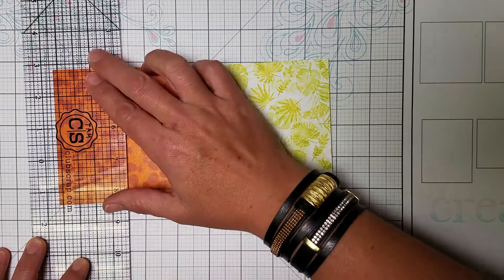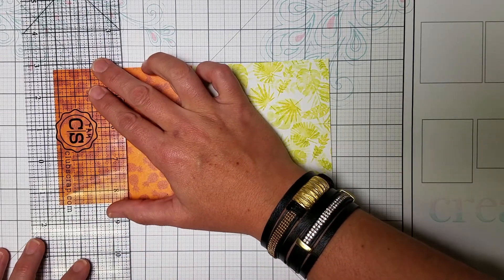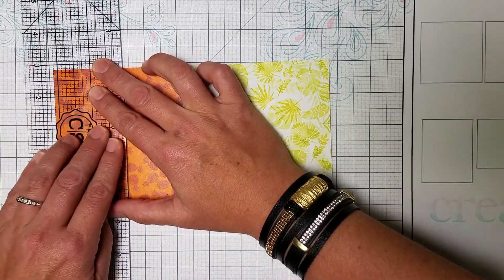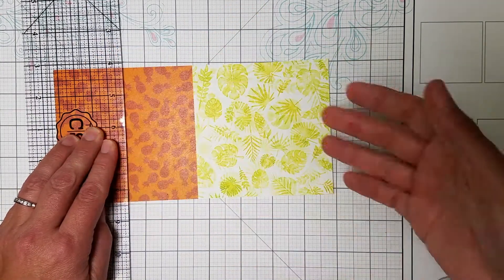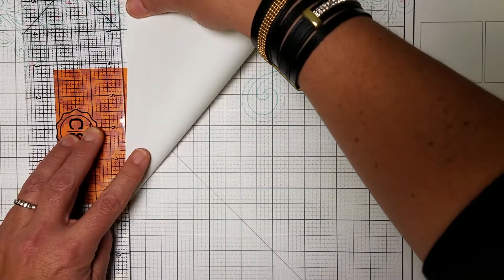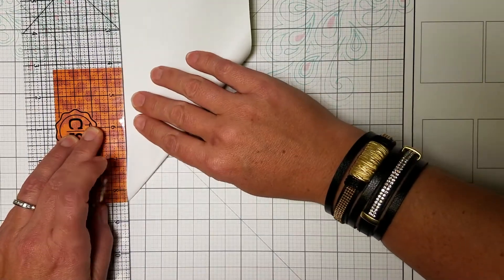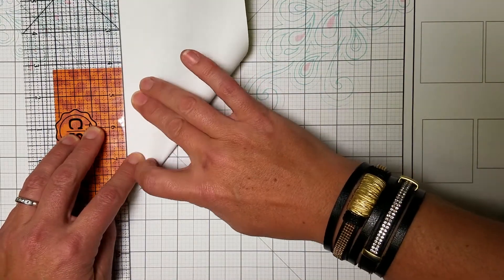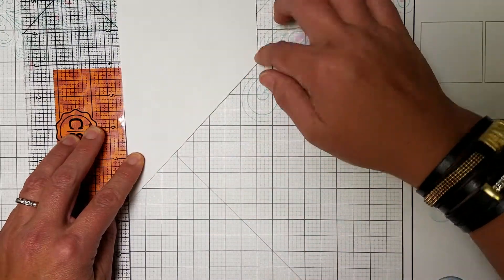Once you find that measurement, just hold that ruler down with your non-dominant hand, and I'm going to make a fold. So I will go up so that the edge of my paper now is aligned with the edge of the ruler and make a crease, and then open it.